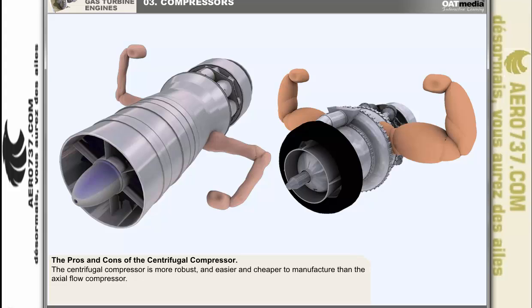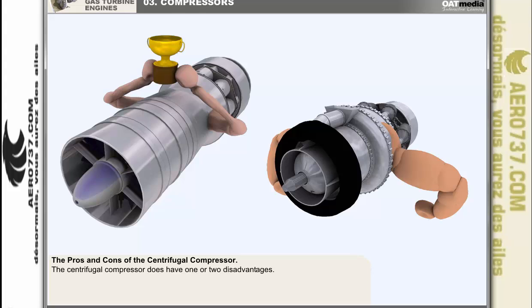The centrifugal compressor is much more robust than the axial flow compressor. That, and the fact that it is the easiest and cheapest of the two types to manufacture, made it the compressor of choice in early gas turbine engines. The centrifugal compressor does, however, have one or two disadvantages which have relegated it to second position with regards to its use in large modern engines.